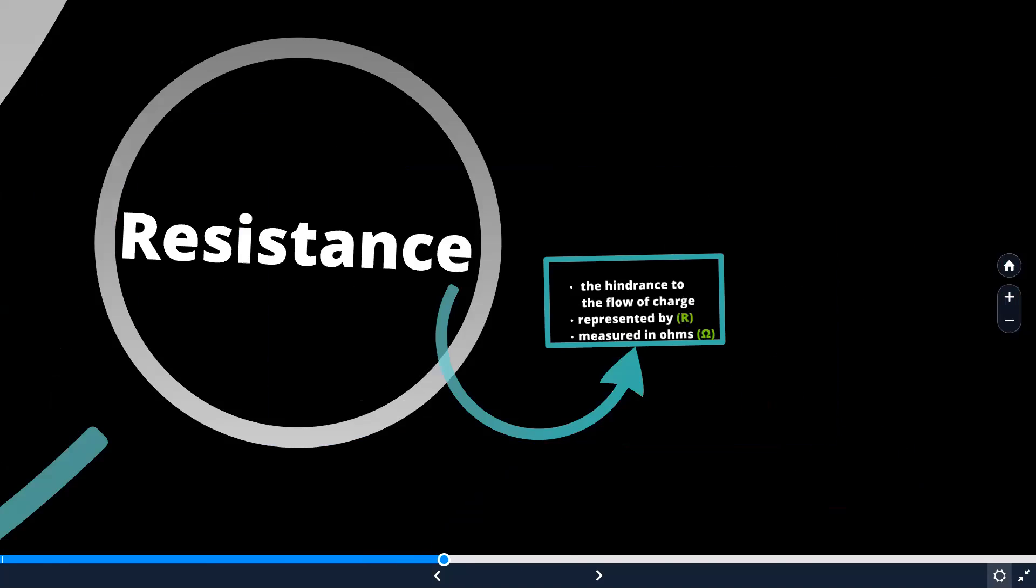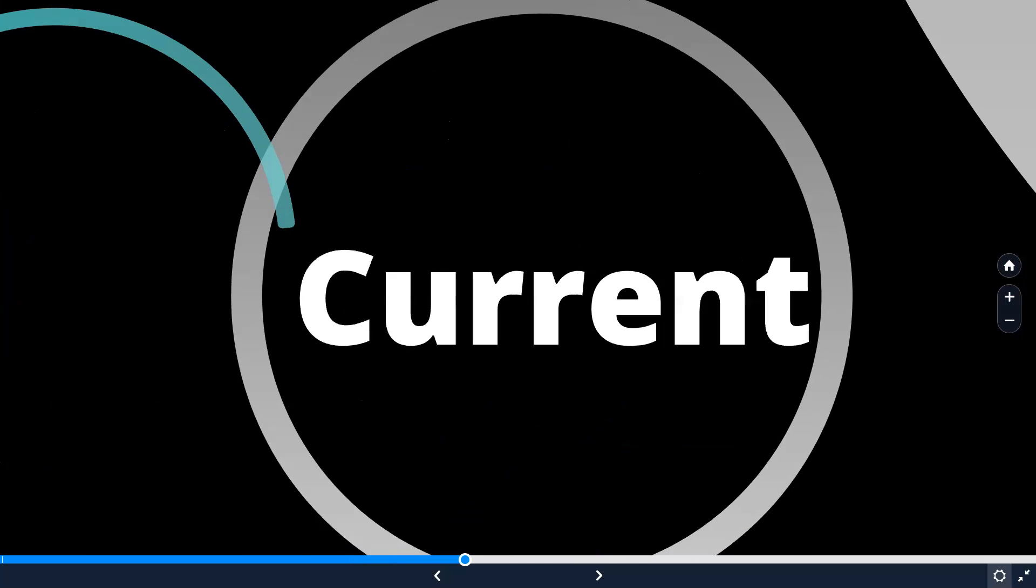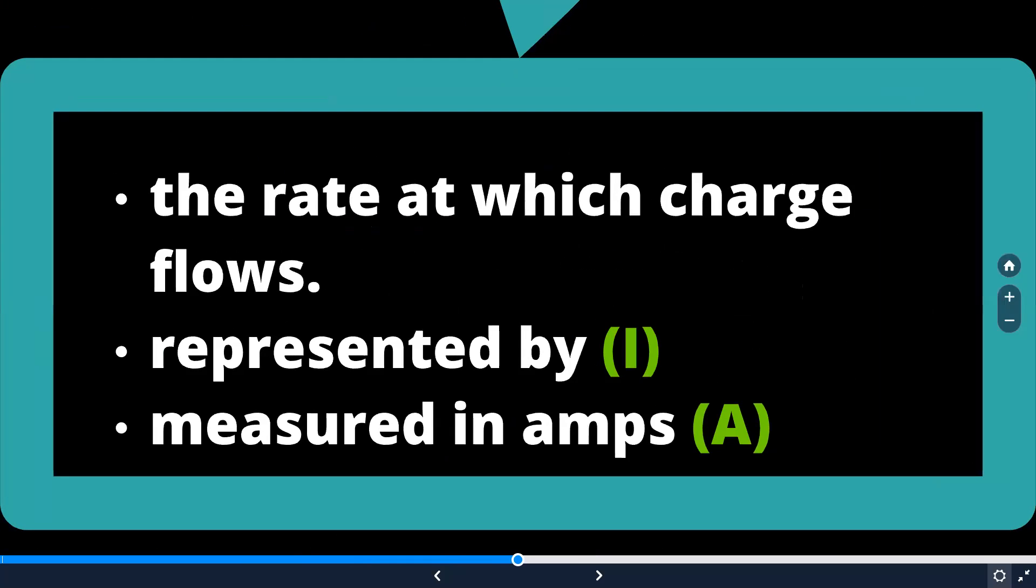The third term is current. Electric current is the rate at which the charge flows. The representation of electric current is I. It can be measured in amperes. We will be using the symbol capital A to represent ampere. We can use the measuring device ammeter to measure current. I hope you remember the measuring device to measure voltage is voltmeter and the measuring device which can be used to measure current is ammeter.